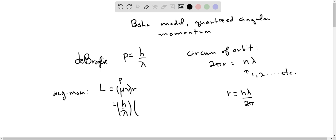We'll put that in there, n lambda over 2π. And you can see what happens - the wavelength cancels top and bottom, and we are left with the angular momentum being nh over 2π.